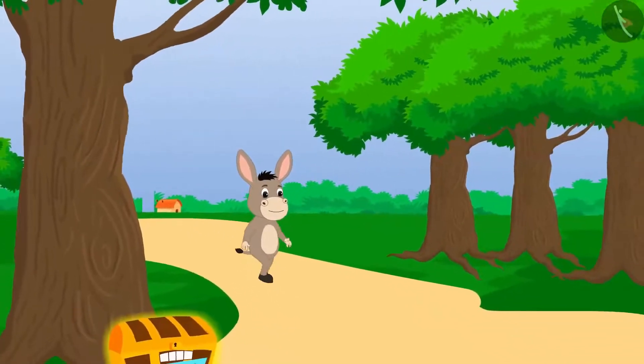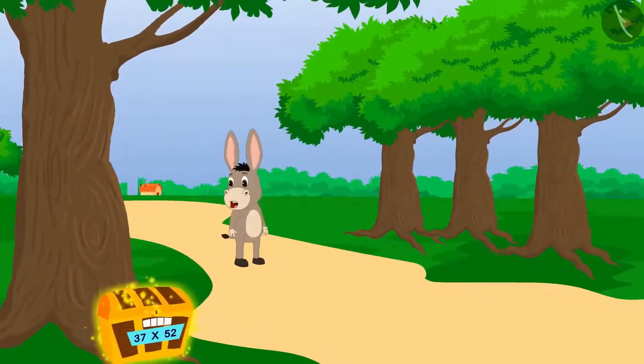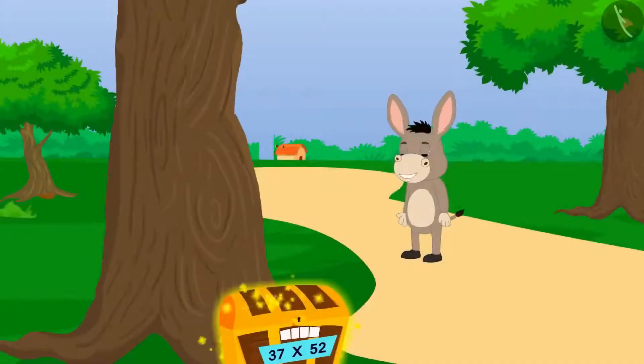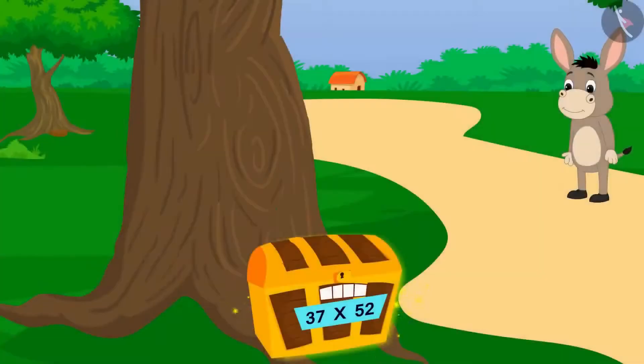Bhola is passing through the forest. He saw a shiny object at some distance. What is this shiny object? It's a box.